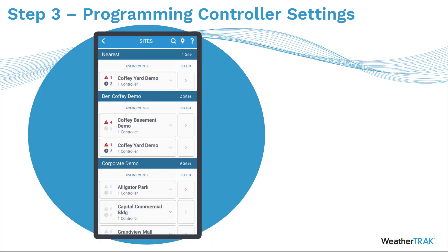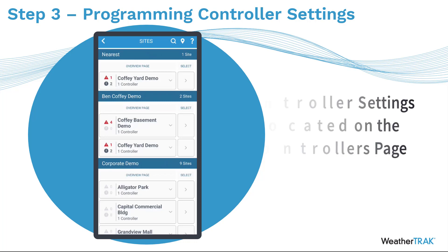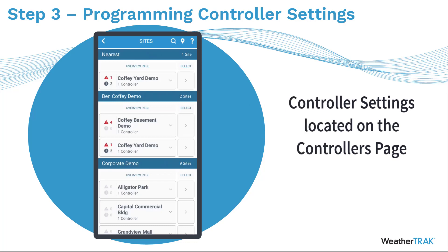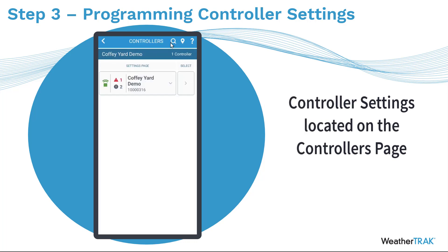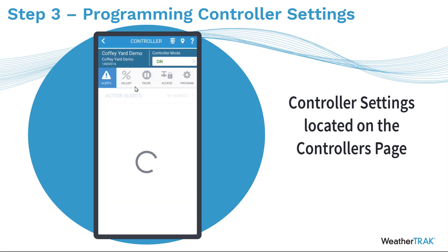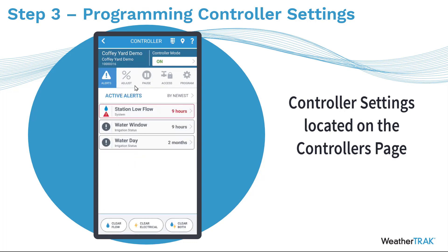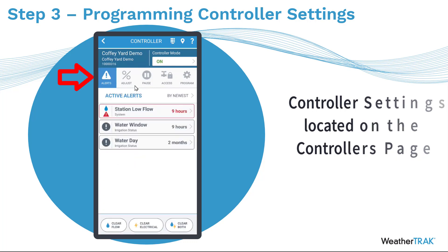Now that you're familiar with the basic navigation of WeatherTrack Mobile, we want to discuss the first steps in programming by completing our controller settings. This lives on the Controllers page, so from the Sites page we select the small button on the right, which takes us to our Controllers page. We then hit the large button on the left to go to our controller settings page, where we see all of our controller level commands.